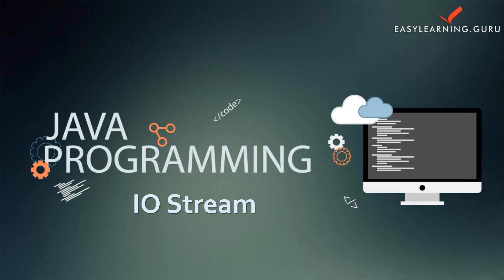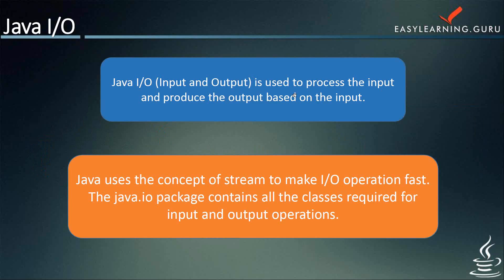A stream can be defined as a sequence of data. The input stream is used to read data from a source and the output stream is used for writing data to the destination. Java provides strong but flexible IO support related to files and networks. We'll be discussing the very basic functionality related to streams and input/output, that is IO.